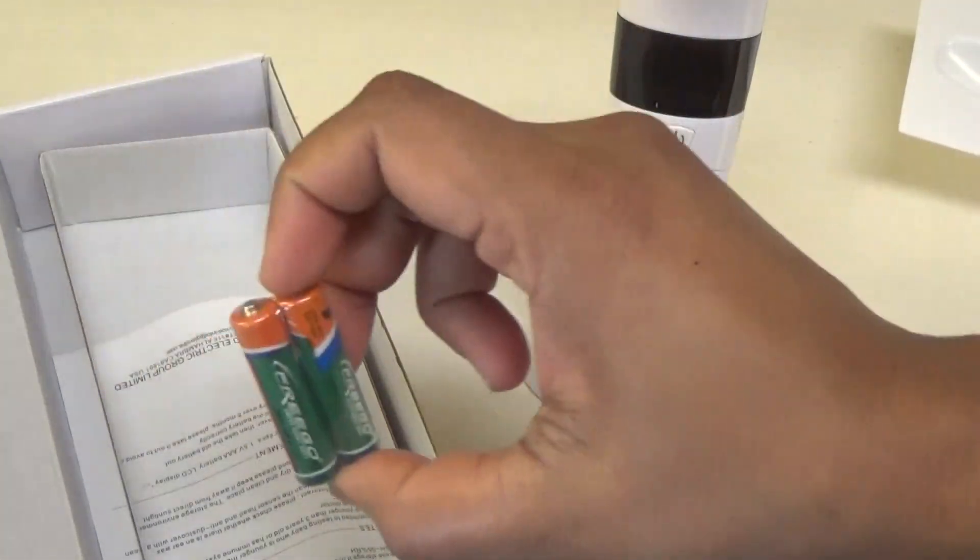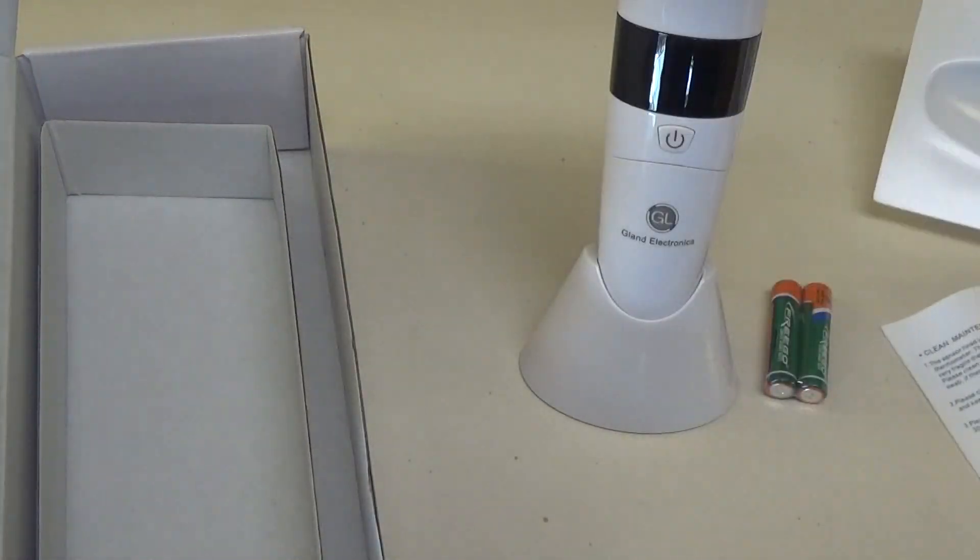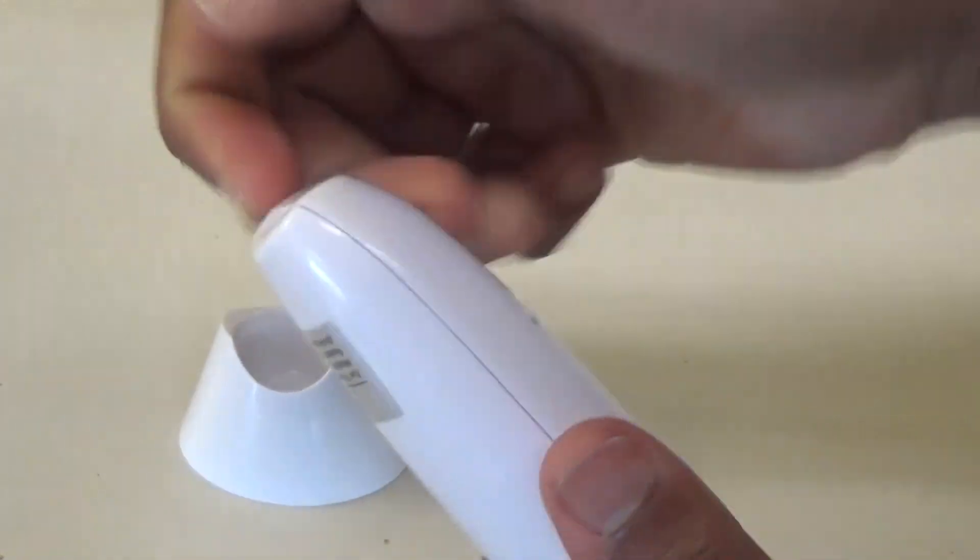What we have in the box: two AAA batteries and the instruction manual. To insert the battery you're going to pull up against the bottom here.